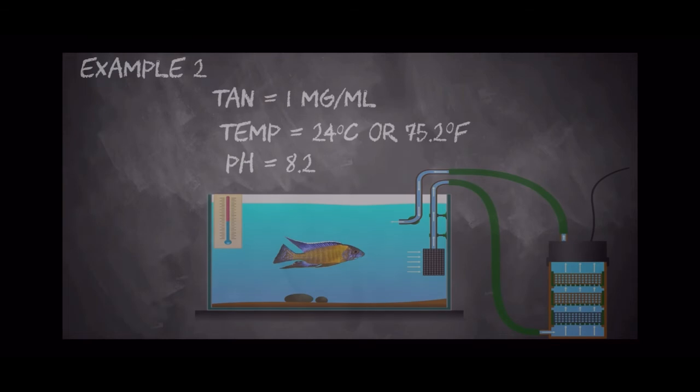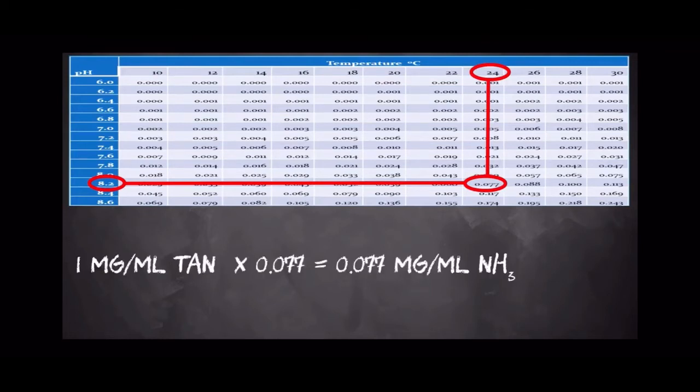Going to the chart again, we first locate the temperature at the top of the chart, followed by the pH to the left of the chart, and then we find that conversion factor where these two parameters intersect. So in this case, it's 0.077. Finally, we multiply that TAN reading of 1 ppm by the conversion factor of 0.077, and we get a reading of 0.077 ppm of ammonia or NH3, which is toxic to the fish.